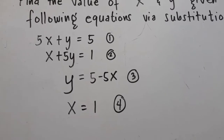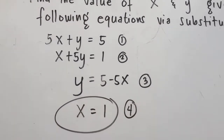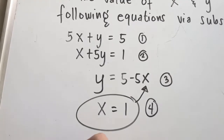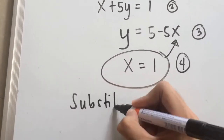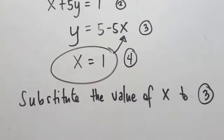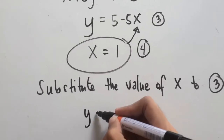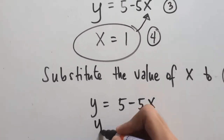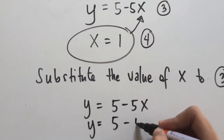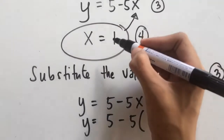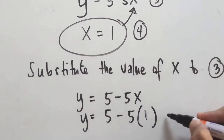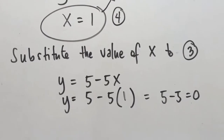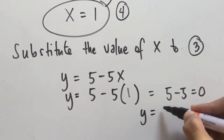We now have the value of x, which is equal to 1 — that's our fourth equation. We can substitute the value of x into equation 3 to find y. So y equals 5 minus 5x becomes y equals 5 minus 5 times 1, which equals 5 minus 5, which equals 0. So the value of y is 0.